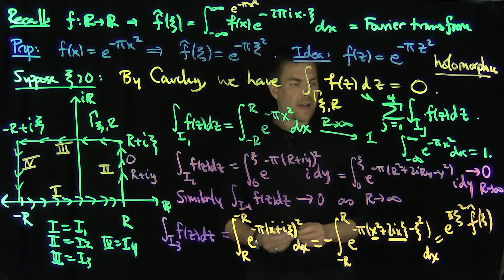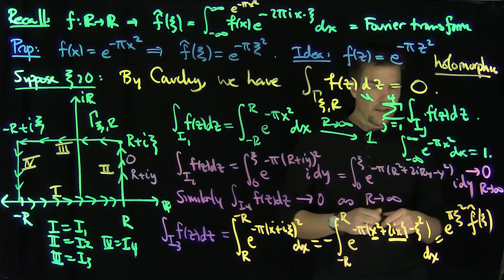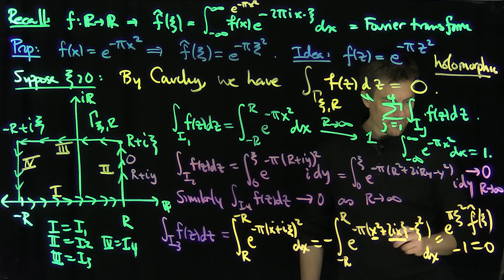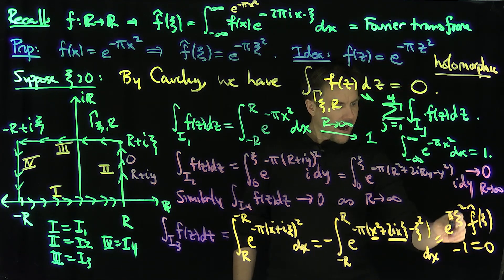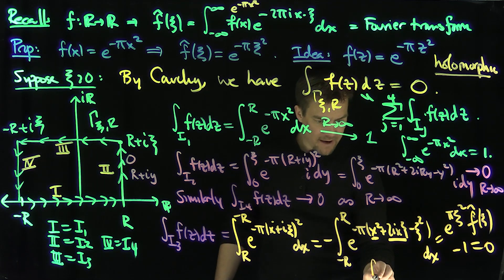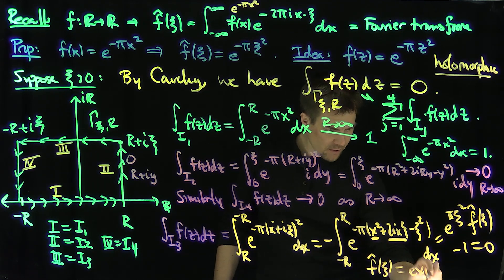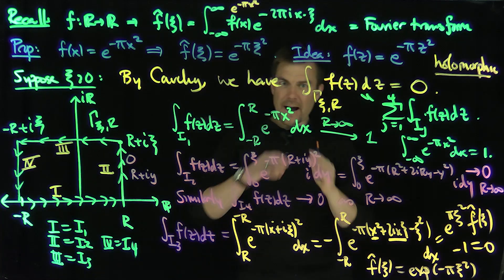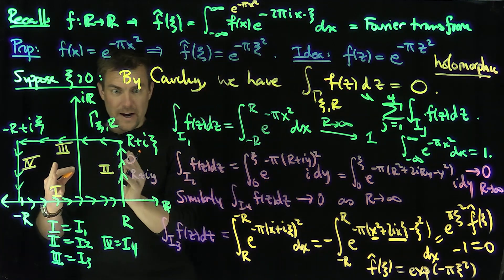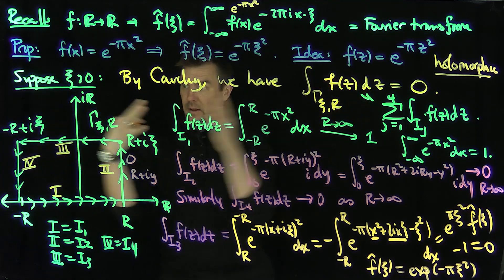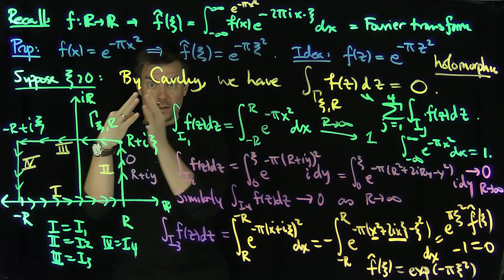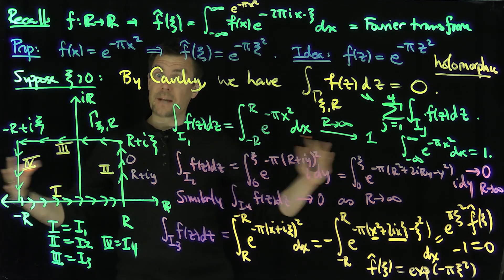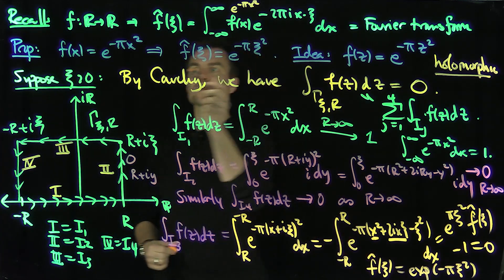Putting it all together: I₁ + I₂ + I₃ + I₄ = 0 gives 1 + 0 − e^{πξ²} f̂(ξ) + 0 = 0, so e^{πξ²} f̂(ξ) − 1 = 0, which says f̂(ξ) = e^{-πξ²}. We've proven our result. By taking a fixed rectangular contour and letting R → ∞, we can use Cauchy for each rectangle and pass to the limit.